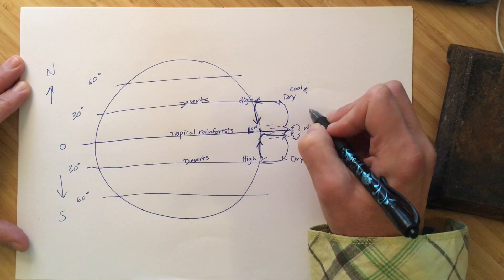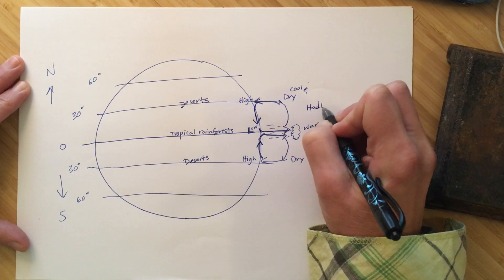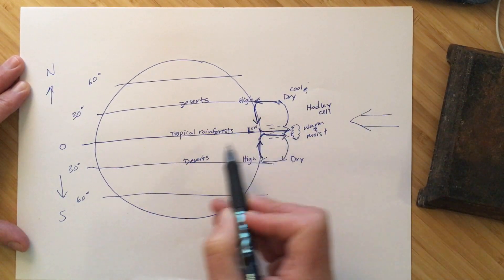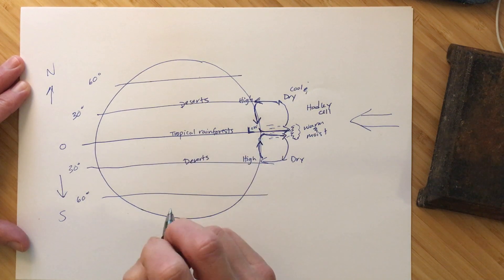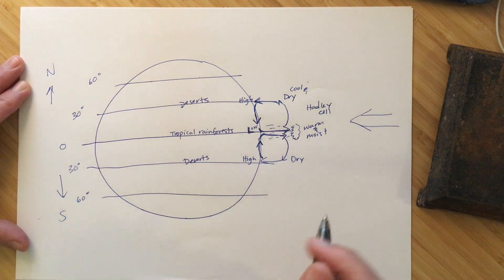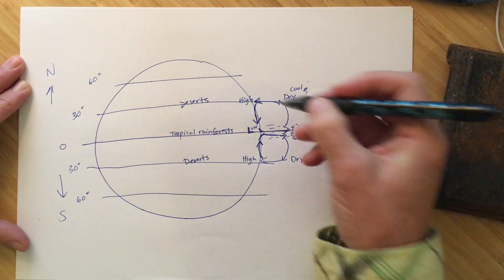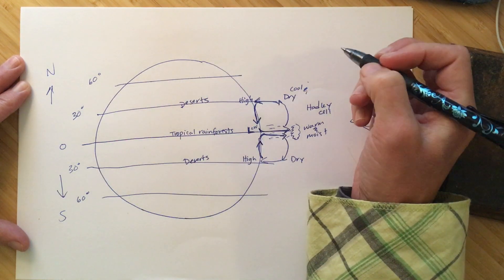So this cell is called the Hadley cell. And that's explaining kind of why we have our tropical rainforests here at the equator and our deserts at 30 degrees. There's two more cells that we have. The next one, between 30 and 60, is called the Ferrel cell.